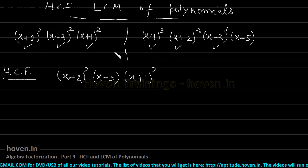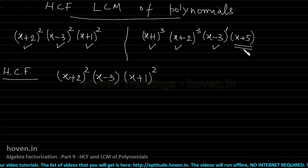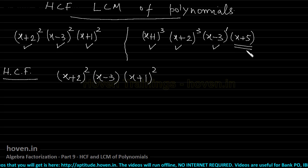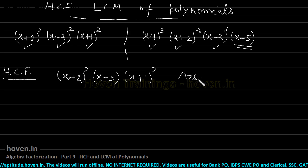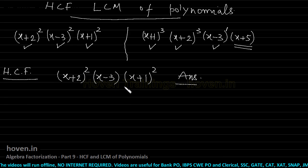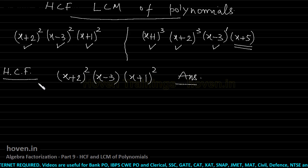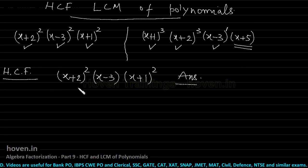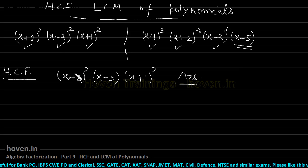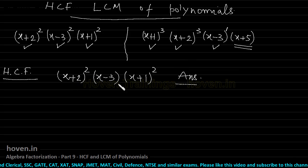We have covered the matched factors. One factor is left that has no matching component on the other side. So we will ignore it and not use it. Whatever we have obtained so far is the HCF answer. This is how we find HCF in a simple way. With just this knowledge, you can look at an exam question with complicated options and get the answer in 5 to 10 seconds.